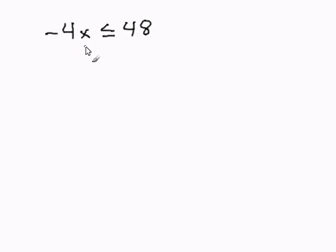In this problem, in order to get x by itself, I must get rid of the negative 4 in front of the x. And to do that, I have to divide this term by negative 4.